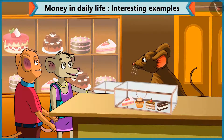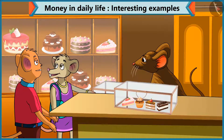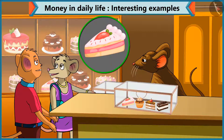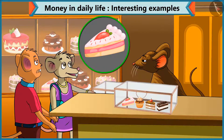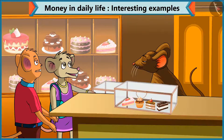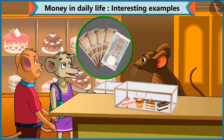Chi Chi, what pastry do you want to buy? I want to have this pastry. Brother, what is the cost of this pastry? This pastry is 45 rupees. Chi Chi, for 45 rupees, give 4 notes of 10 and 1 note of 5.